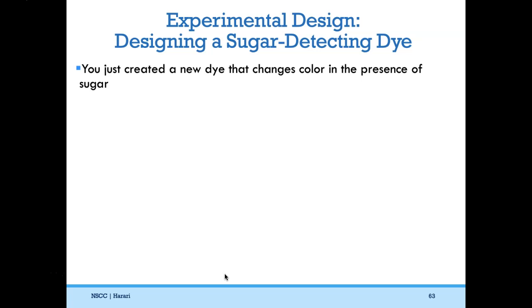In many experiments, subjects are divided into test groups and control groups. The test group is exposed to the experimental variable; the control group is given the placebo and not exposed to the experimental variable. If both the control group and the test group show the same results, the hypothesis cannot be supported — you would reject the hypothesis. Let's apply this to designing a sugar-detecting dye. Suppose you created a dye that changes color in the presence of sugar — it turns orange when sugar is present in a solution. Should you be confident if you just see it turn orange once? No — you'd have to make sure it always picks up sugar and won't react with just water.